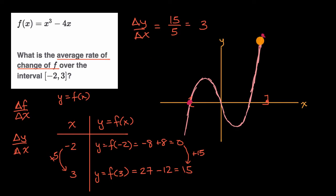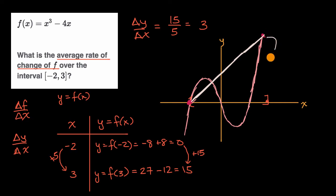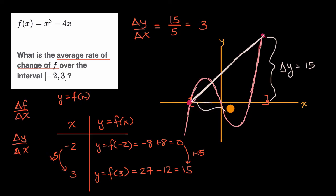When we're thinking about the average rate of change over this interval, we're really thinking about the slope of the line that connects these two points. The line that connects these two points looks something like this. We're calculating our change in y — the value of our function increased by 15 — divided by our change in x, which we went from negative two to three, so that's equal to five. That's all we're doing when we're thinking about the average rate of change.